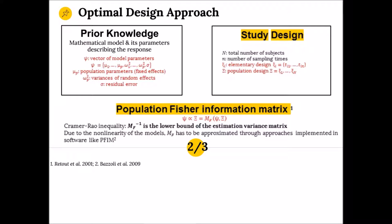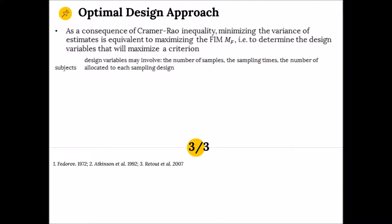Mathematically, as a consequence of the Cramér-Rao inequality, the inverse of the Fisher information matrix is a lower bound of the estimation variance matrix. Due to the non-linearity of the model, especially in PK, the Fisher information matrix has to be approximated. This approximation is, fortunately, implemented in different software.